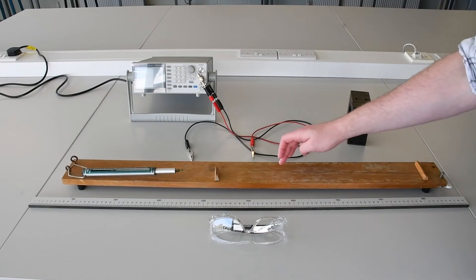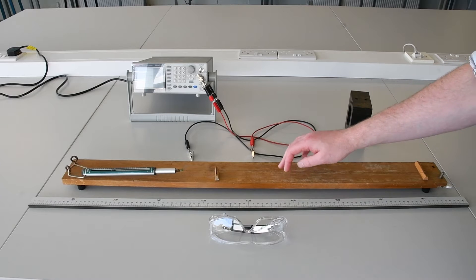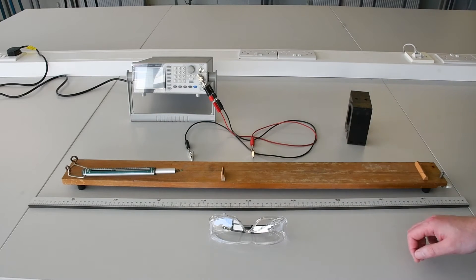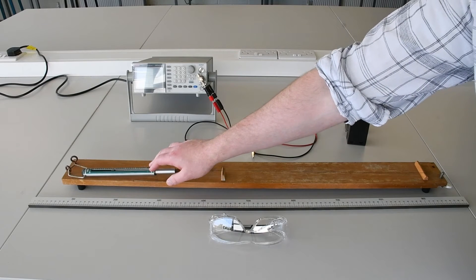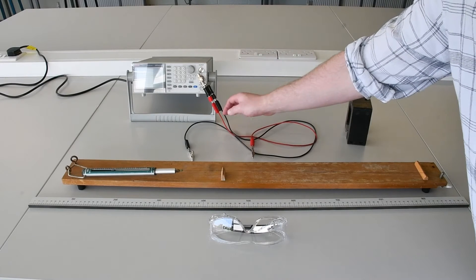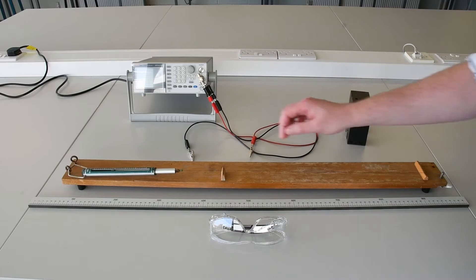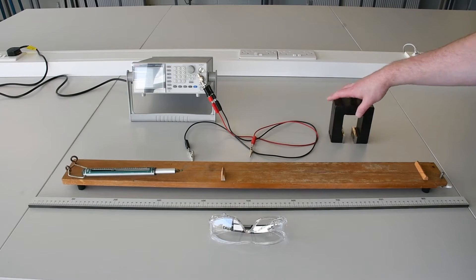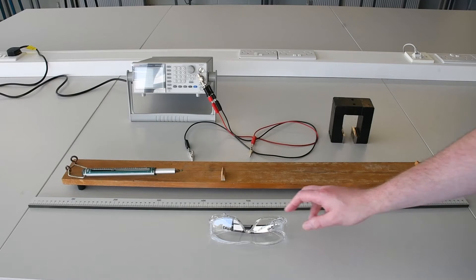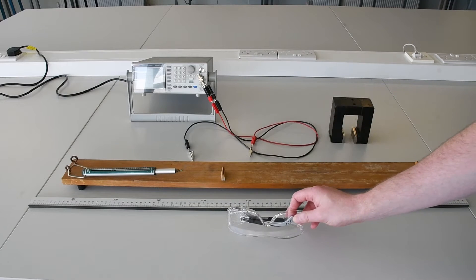Our apparatus consists of a sonometer, which has a string, a fixed bridge, a movable bridge which we'll use to adjust our length, a Newton balance to measure the tension of the wire, and a tension control key to adjust the tension. We'll also use a signal generator with leads and clips for the wire, a bar magnet, a meter stick to adjust the length of our string, and safety glasses in case the string breaks.